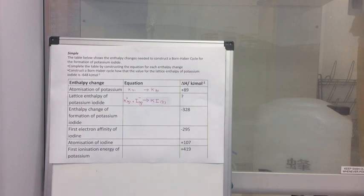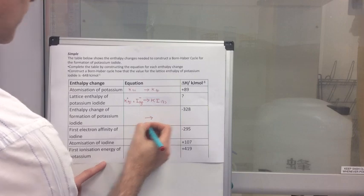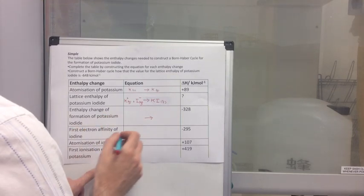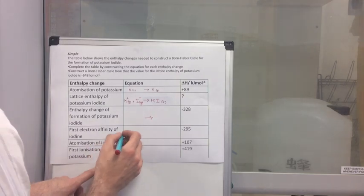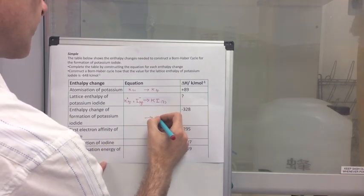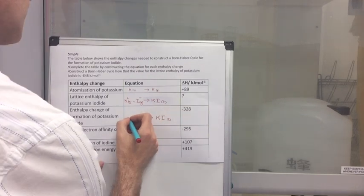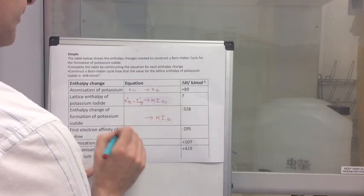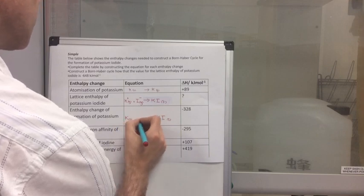The enthalpy change of formation of potassium iodide is when one mole of a compound is formed from its elements in their standard states. So we're forming one mole of KI solid. Which elements will that be formed from?